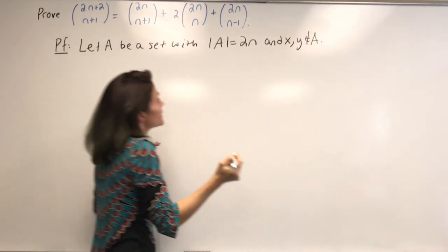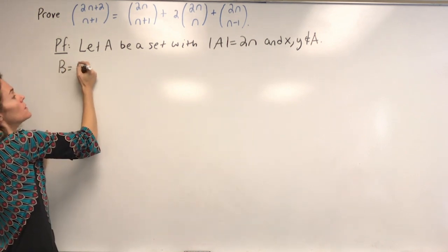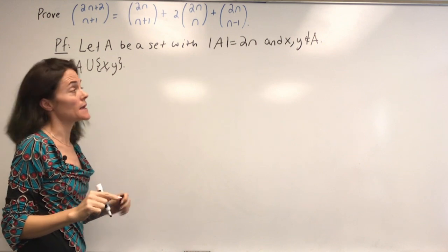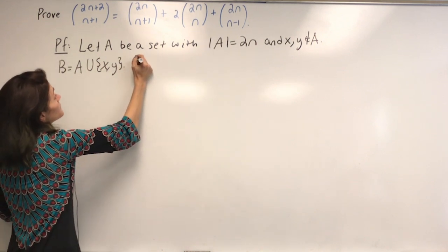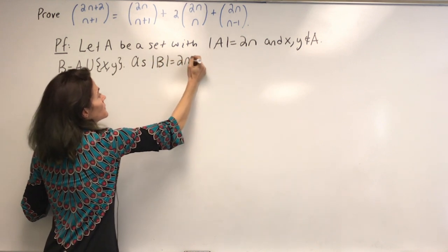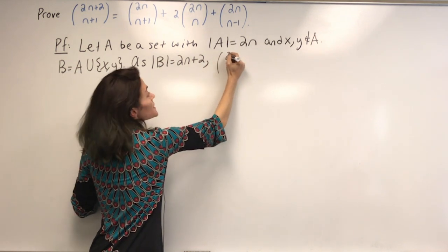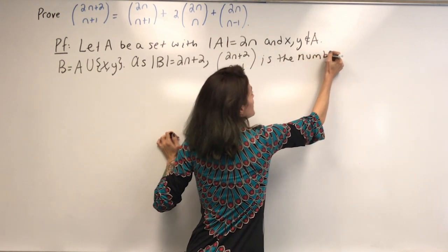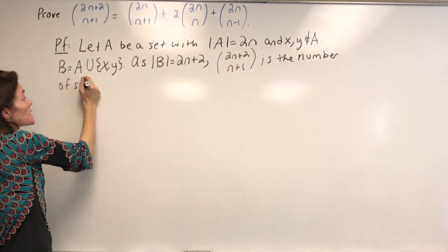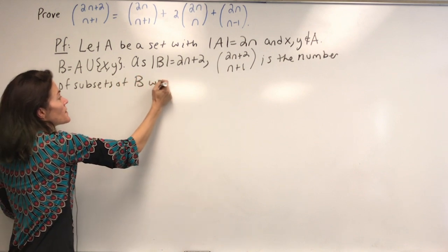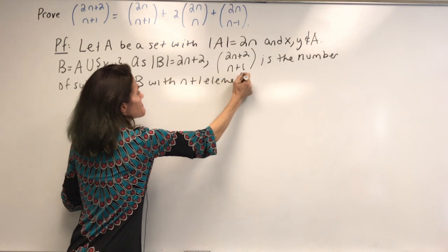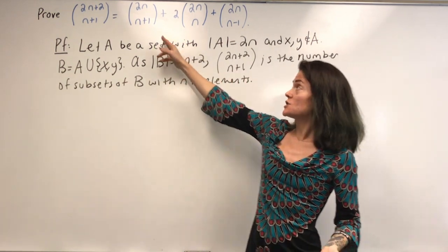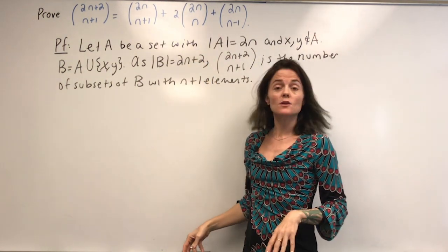I will take two things, x and y, that are not in A, and then let B equal A union these two elements. Notice the cardinality of B is 2n plus 2. Then 2n plus 2 choose n plus 1 is the number of subsets of B with n plus 1 elements. This is our setup, and it's going to allow us to get going. What we need to do is argue why the right-hand side also counts the same thing.